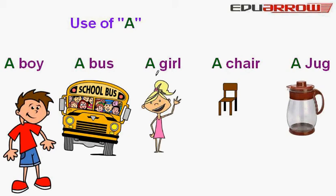A girl — we add A before 'girl' because G is a consonant. A chair — we add A before 'chair' because C is a consonant.